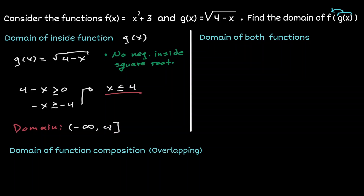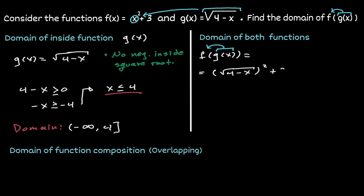Now let's define the composition and find its domain. We substitute g(x) into f: the square root of (4 minus x) is raised to the second power plus 3. The square root cancels with the exponent, and simplifying gives negative x plus 7. This is a line, and a line has no restrictions — every single x value is allowed. So the domain of the composition is from negative infinity to positive infinity.